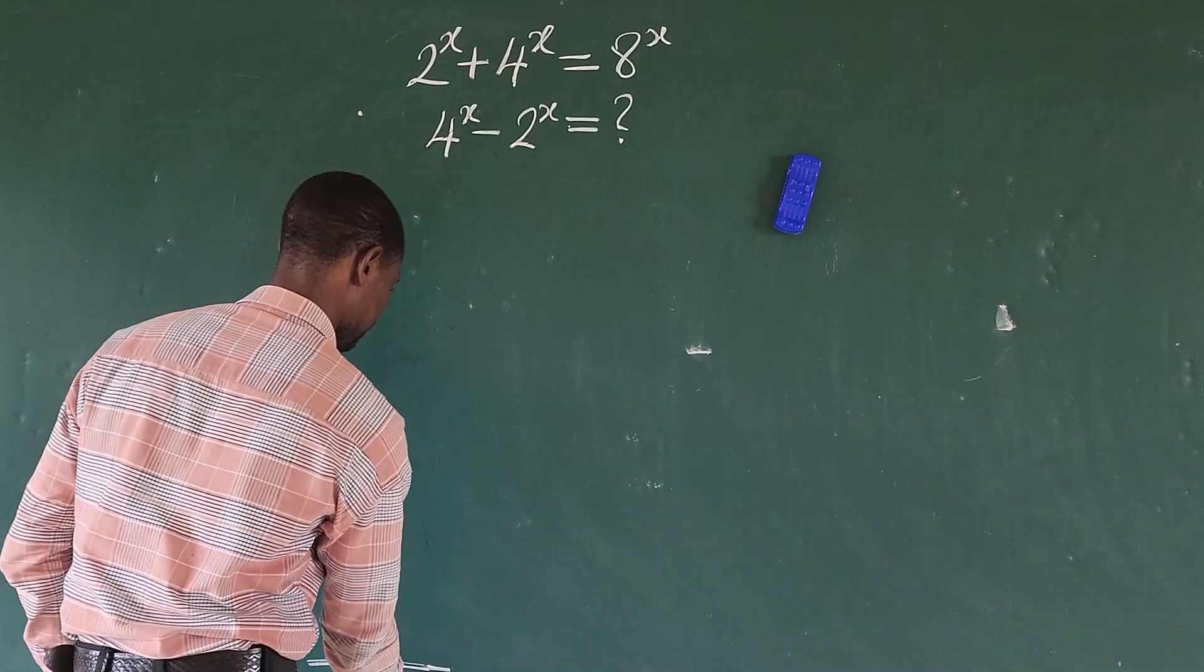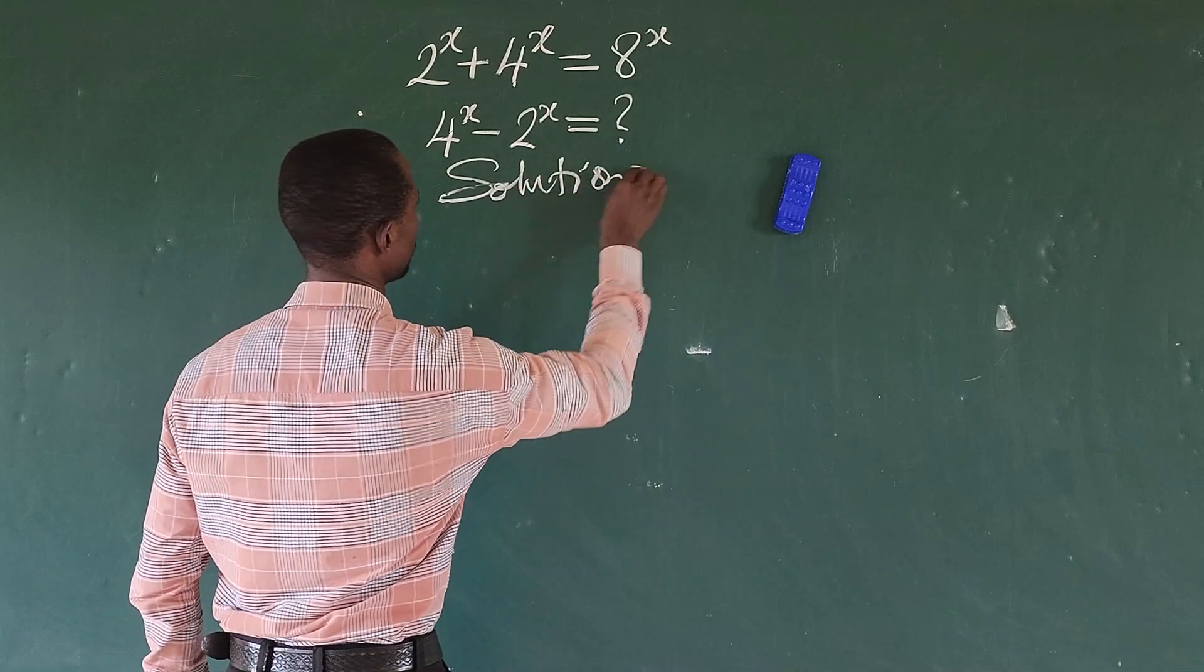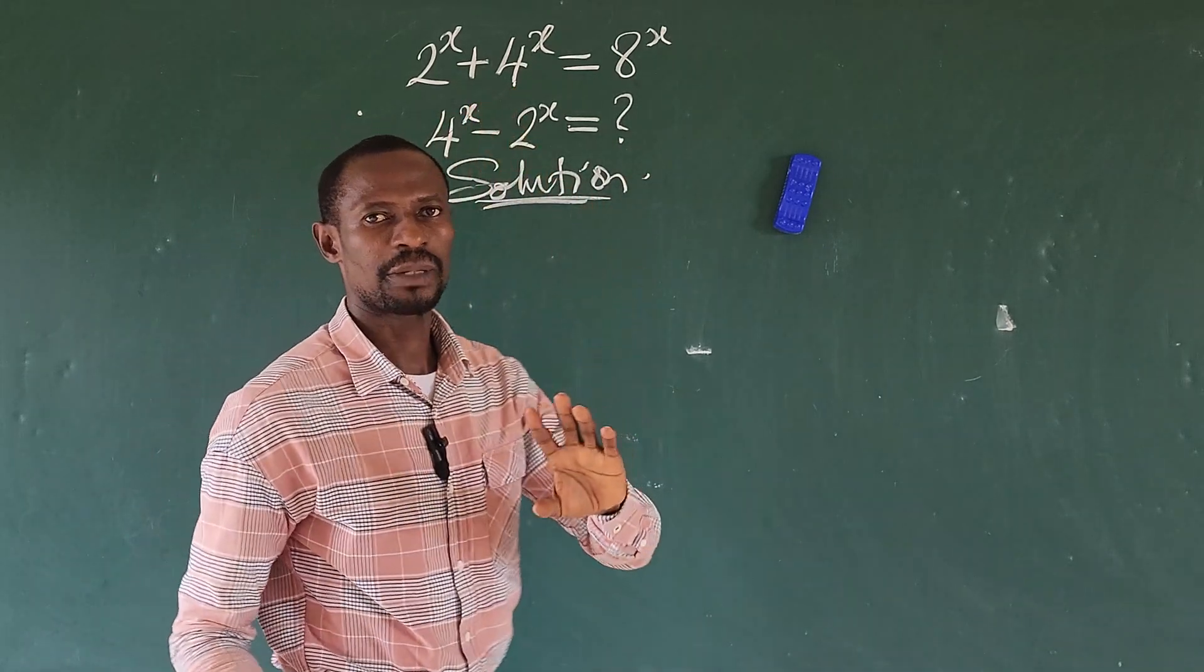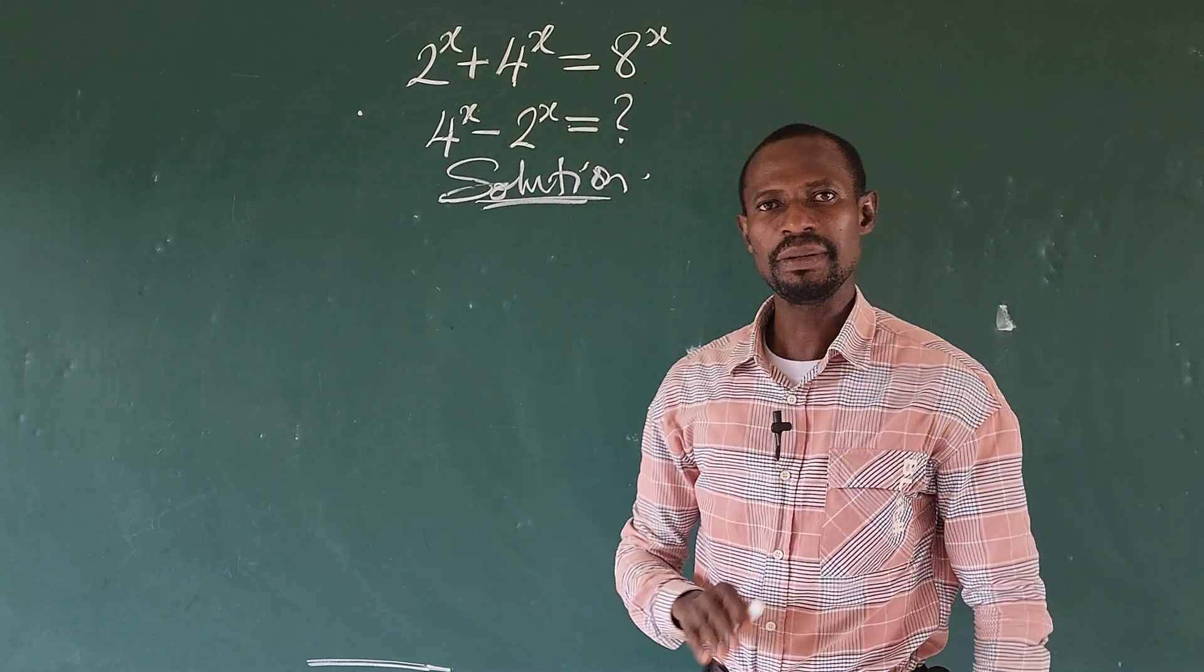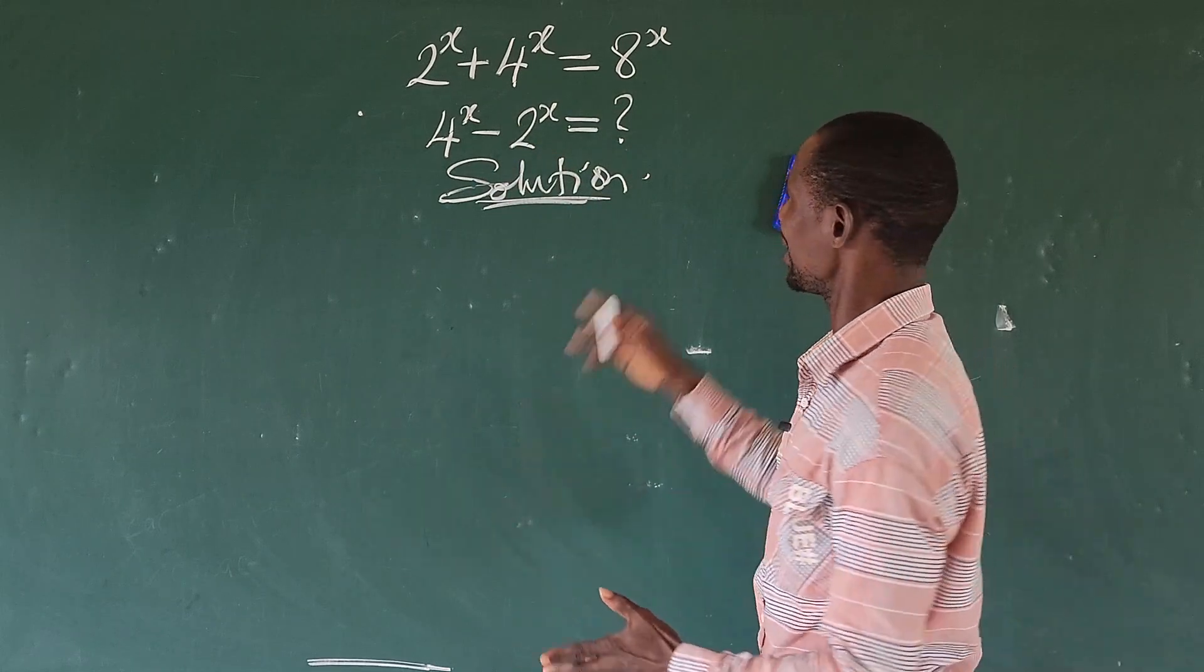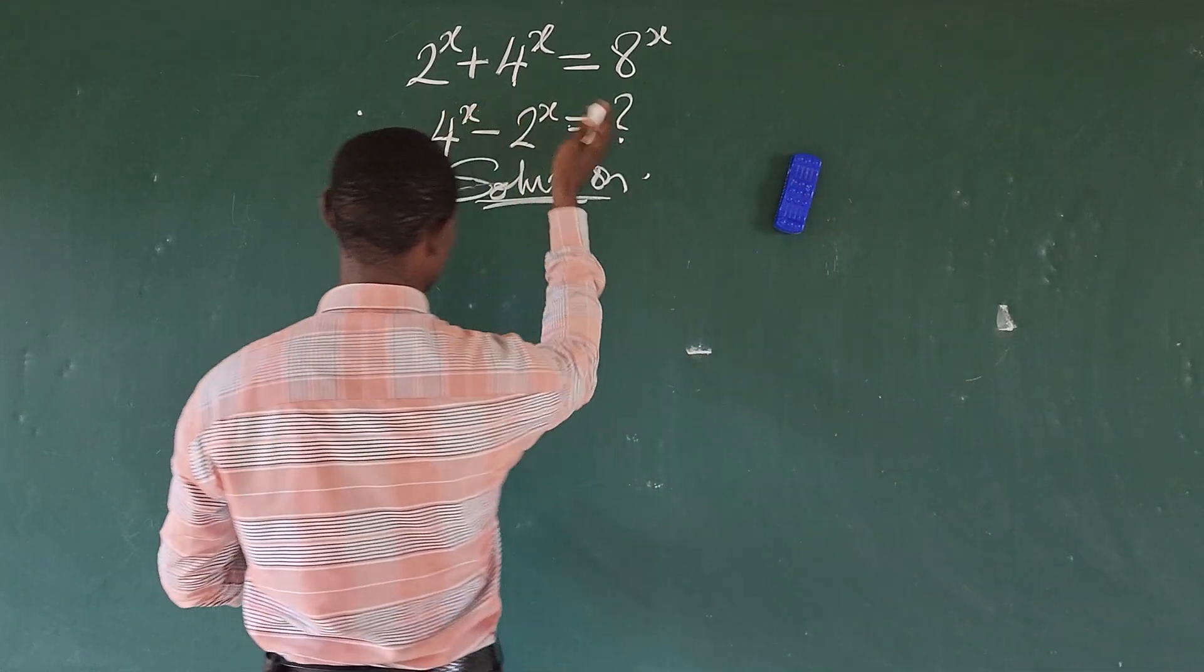So let's take our solution first. Now, look at this question. We can express all the terms we have here as 2 because 4 can be written as 2 to the power of 2 and 8 can be written as 2 to the power of 3. So let's rewrite the whole of this expression.